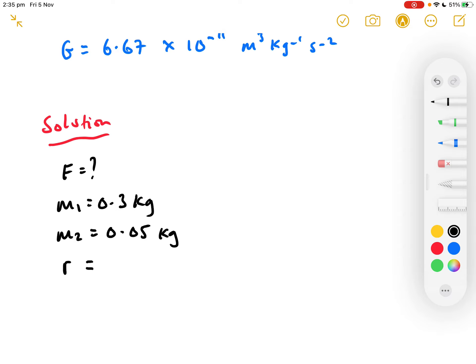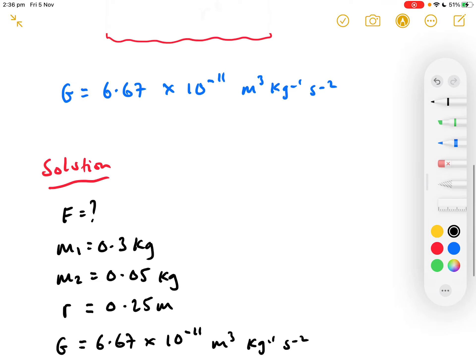And R, the separation distance, 0.25 metres. And G, of course, we look that up from the tables of data. 6.67 times 10 to the minus 11 metres cubed per kilogram per second squared.